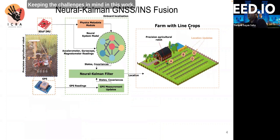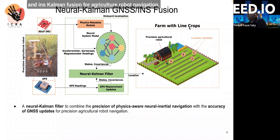Keeping the challenges in mind, in this work, we propose the use of physics-aware neural inertial navigation as the propagation model in GNSS-INS-Kalman fusion for agricultural robot navigation. Instead of using heuristic models, a neural network predicts the velocity and location of the robot during Kalman propagation from a window of IMU readings. Subsequently, the robot can navigate longer without GPS updates over heuristic-based techniques.